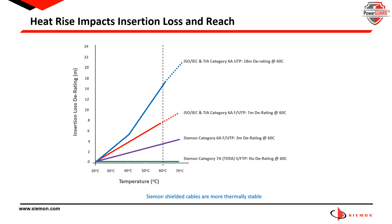As shown here in this graph, shielded cables exhibit superior heat dissipation, which results in lower temperature rise. In fact, our Category 7A fully shielded cables did not require any length derating to provide full support of 10-gigabit-per-second applications at elevated temperatures up to 70°C or 158°F.